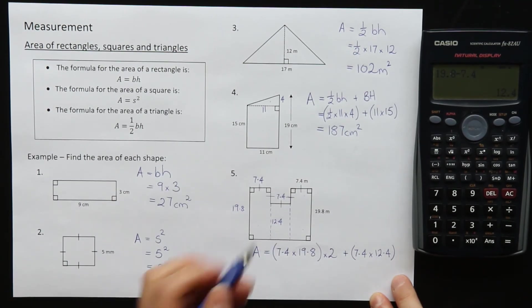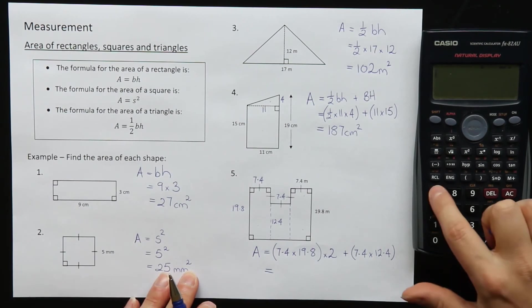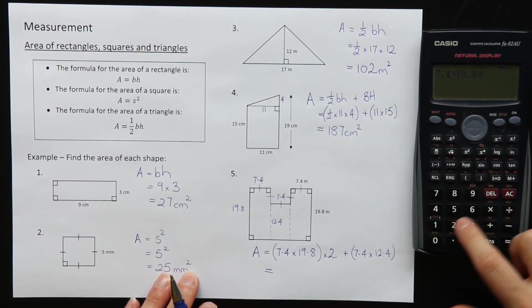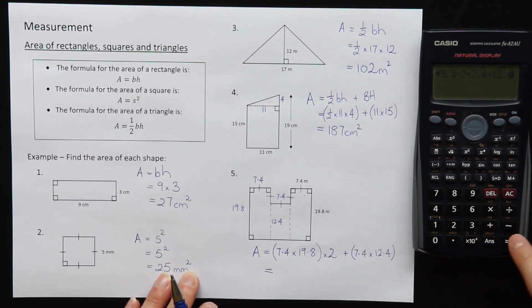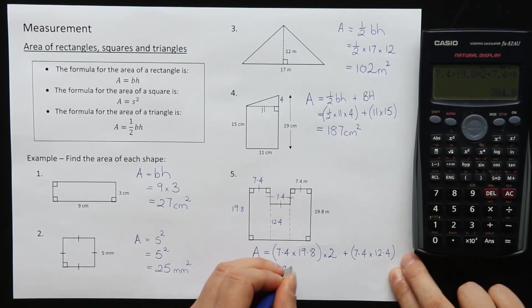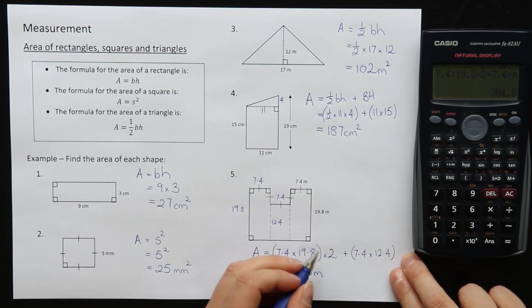And there they are. One, two, three rectangles all done. So now we can type this in to find our answer. 7.4 times 19.8 times 2 plus 7.4 times 12.4. And we get 384.8 meters squared.